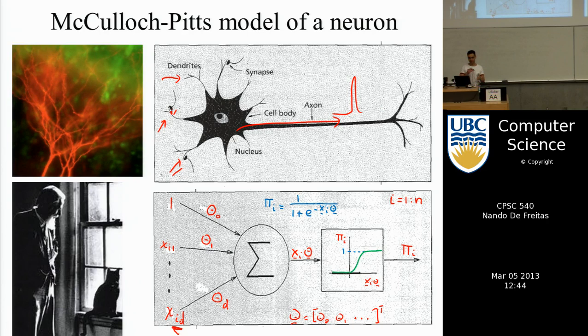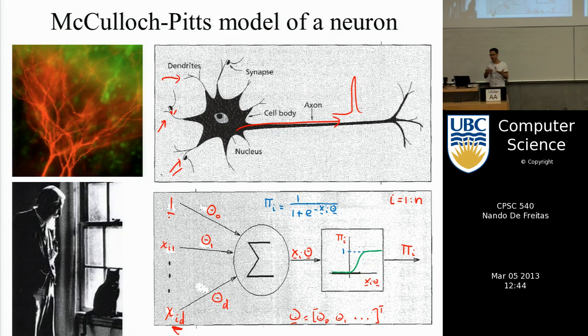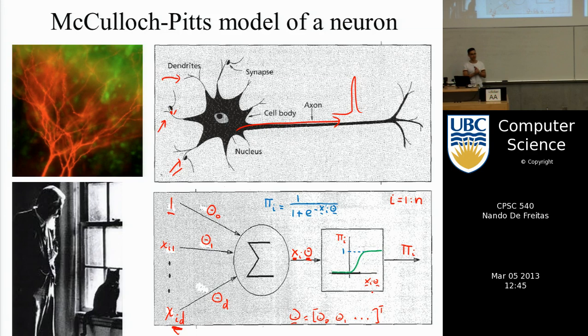We have d inputs — d attributes or features as in regression. We add a one so we can have a bias term to move the function up and down. Each input gets scaled by a parameter theta, which in neural network language is called the synaptic weight. You take the vector x of all your inputs of size d by one, multiply by the vector theta of size d by one, giving you a single scalar — x_i times theta. Essentially, we multiply each input by a weight and sum them all, which is the dot product of the x and theta vectors.